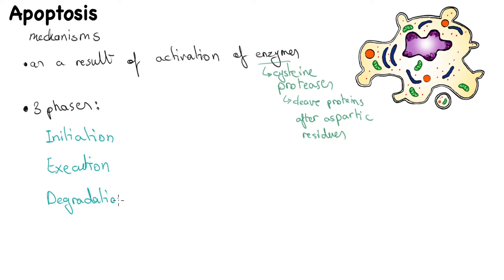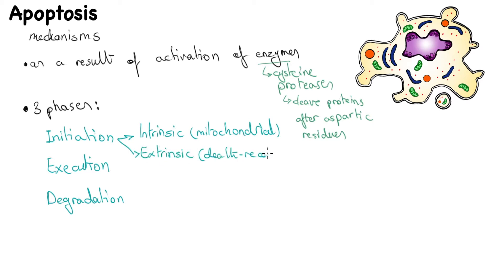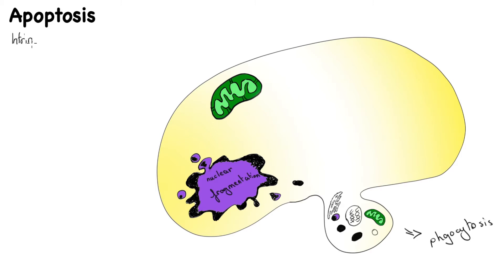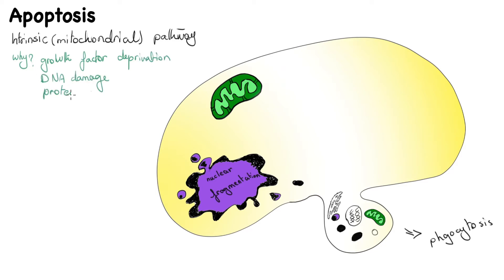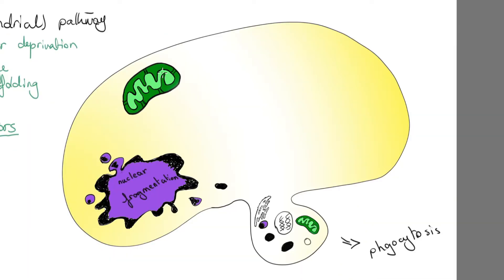The initiation phase itself can occur via two different pathways: the intrinsic or mitochondrial pathway, or the extrinsic or death receptor–initiated pathway. The intrinsic or mitochondrial pathway starts from within the cell's mitochondria as a result of growth factor deprivation, DNA damage, protein misfolding, and many more instances. In all these cases what initiates the pathway is an internal factor — there is no external receptor-mediated signal; it's all internal.